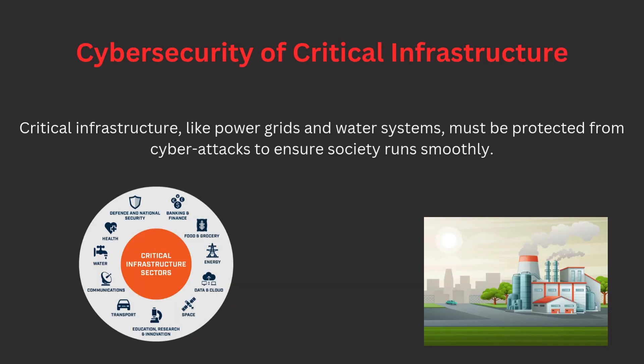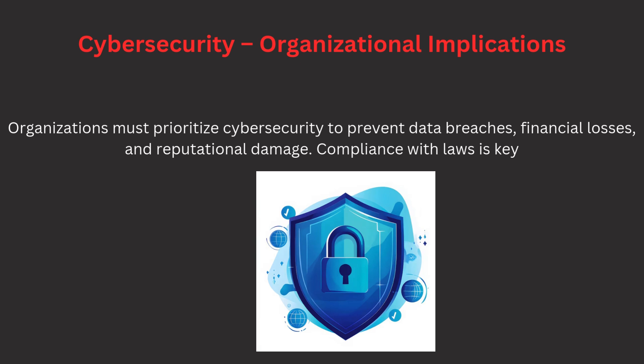Critical infrastructure refers to the systems that are vital for the functioning of society, such as power plants, water supplies, and transportation networks. If these systems are attacked or damaged, it can cause massive problems — for example, a cyber attack on a power grid could leave an entire city without electricity. Protecting critical infrastructure from cyber attacks is a top priority for governments and organizations worldwide, as these systems are often targeted by cyber criminals and cyber terrorists.